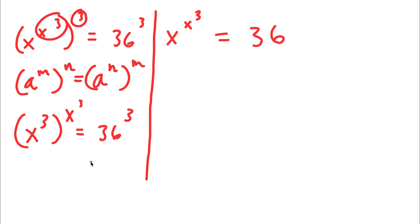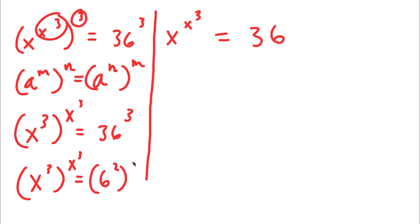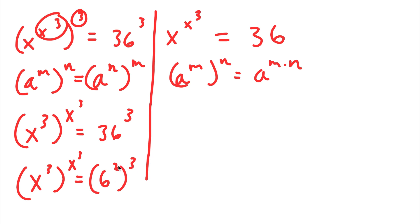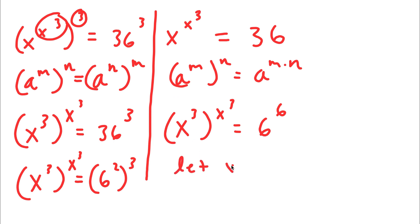Now 36 I can write as 6 to the power of 2. So I have x to the power of 3 to the power of x to the power of one-third equals 6 to the power of 2 to the power of 3. Using the power rule, 6 to the power of 2 to the power of 3 equals 6 to the power of 2 times 3, which is 6 to the power of 6. So now I have x to the power of 3 to the power of x to the power of one-third is equal to 6 to the power of 6. I'm going to let x to the power of 3 equal the variable y, so now I have y to the power of y is equal to 6 to the power of 6.